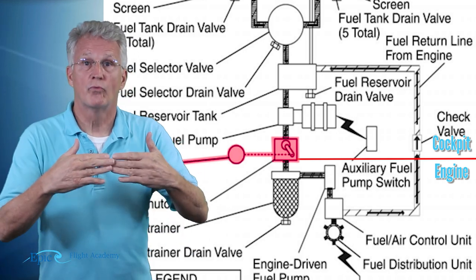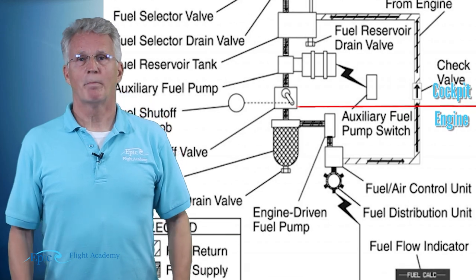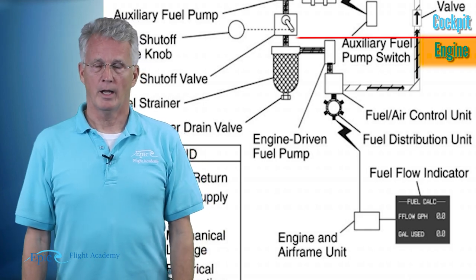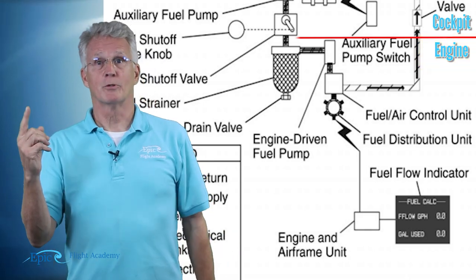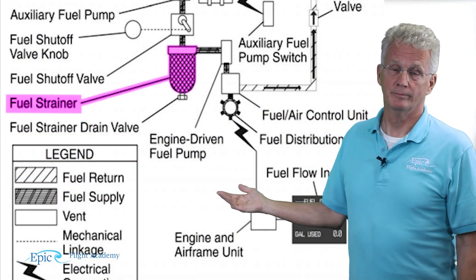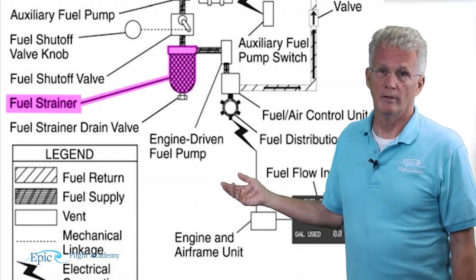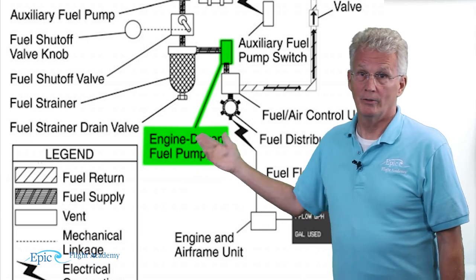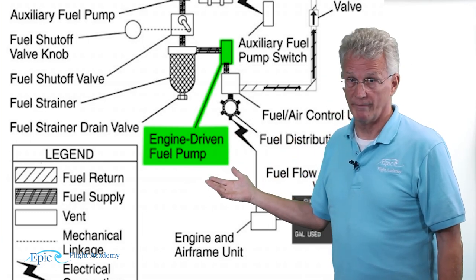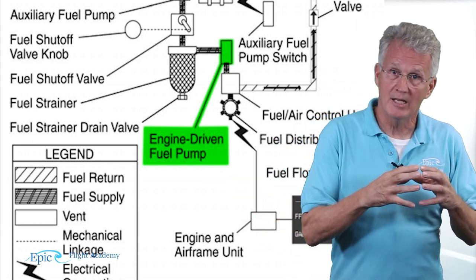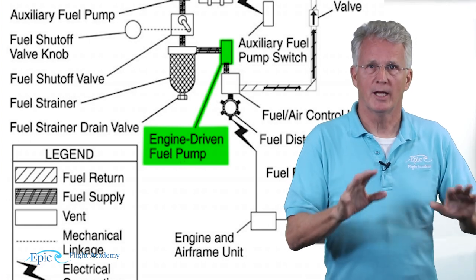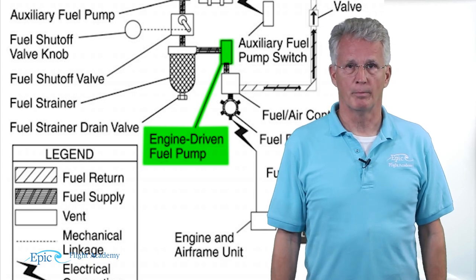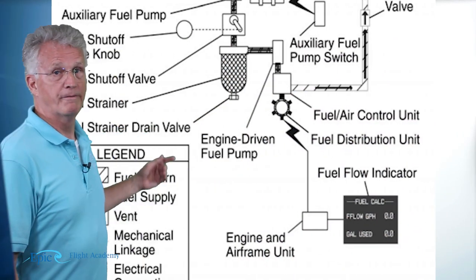Now we are forward of the firewall, meaning we are on the engine side. As we continue our journey, the first thing we find is the fuel strainer. From the fuel strainer, fuel is routed to another fuel pump — but notice this one is engine driven. This fuel pump is mounted on the engine and when the engine turns, this fuel pump turns and is moving fuel. This engine-driven fuel pump moves that fuel to the fuel air control unit.